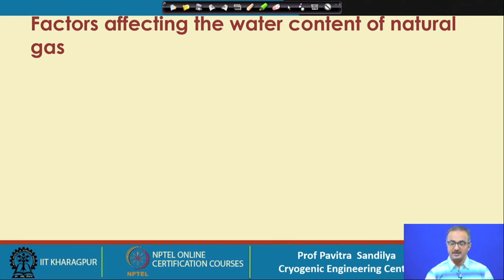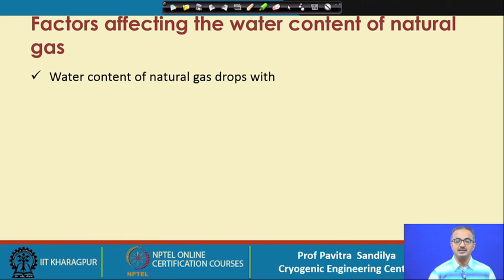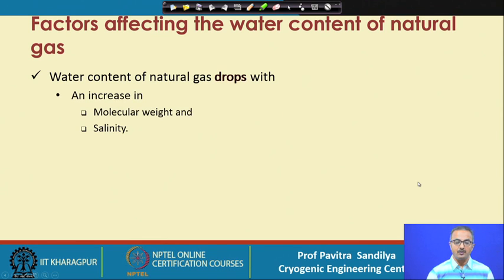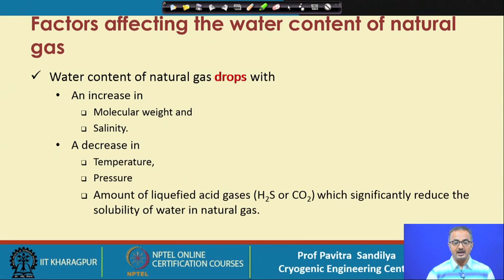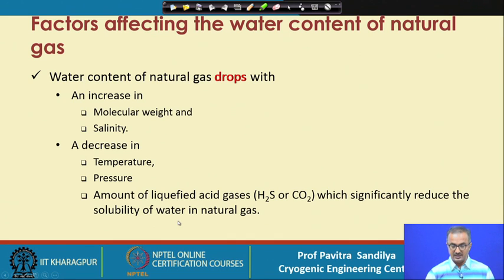The various factors which affect water content in natural gas are as follows: water content will drop with an increase in molecular weight, an increase in salinity (presence of salts), a decrease in temperature, a decrease in pressure, and a decrease in the amount of liquefied acid gases, which significantly reduce the solubility of water in natural gas.